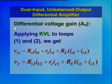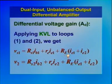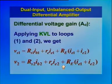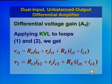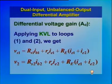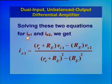Let us derive the expression for differential voltage gain. Applying KVL to loops 1 and 2, we get: VS1 equal to RS1·IB1 plus RE·IE1 plus RE·(IE1 plus IE2), and VS2 equal to RS2·IB2 plus RE·IE2 plus RE·(IE1 plus IE2), where IB1 and IB2 are base currents of transistors Q1 and Q2 respectively, and IE1 and IE2 are emitter currents of Q1 and Q2. RS1 and RS2 are source resistances of VS1 and VS2.